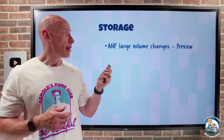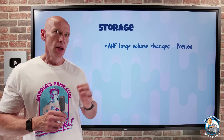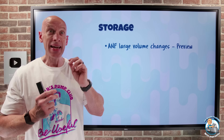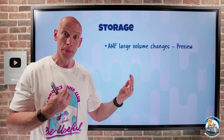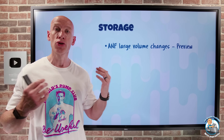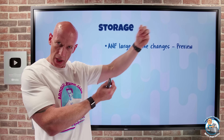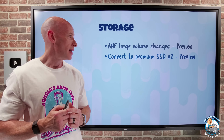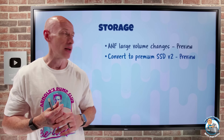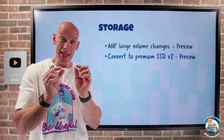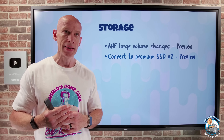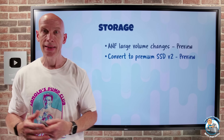On the storage side, Azure NetApp Files has large volume changes in preview. Large volumes can now go up to one Pebibyte of storage, and there's a new large volume type ranging between one and two Pebibytes, with 12.5 gigabytes per second of performance for every Tebibyte of storage allocated — so throughput improves as you add more storage. Also, you can now convert to Premium SSD V2 from standard SSD, standard HDD, and Premium SSD V1. The big deal with Premium SSD V2 is you can separately pick IOPS and throughput and dynamically change those values, with very low latency.